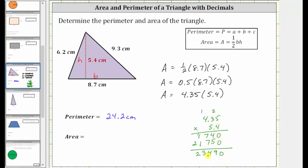and therefore the product is 23.490, but we can leave off the zero in the thousandths place value, which means the area is 23.49 square centimeters.